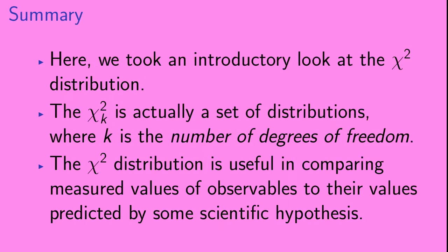Let's summarize. Here we took an introductory look at the chi-squared distribution. The chi-squared is actually a set of distributions labeled by k, where k is the number of degrees of freedom. The chi-squared distribution is useful in comparing measured values of observables to their values predicted by some scientific hypothesis.